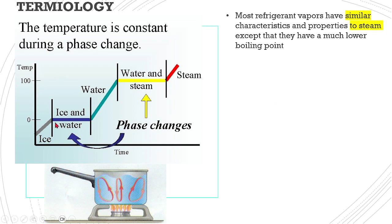This is the phase change curve. If you consider ice which is below 0 degrees, let us say you are going to heat it up and monitor the temperature using a thermometer. As you are adding heat, the temperature of this thermometer will increase up to 0 degrees. Thereafter, you will notice that even though you keep adding heat, there will not be any increment on the thermometer.